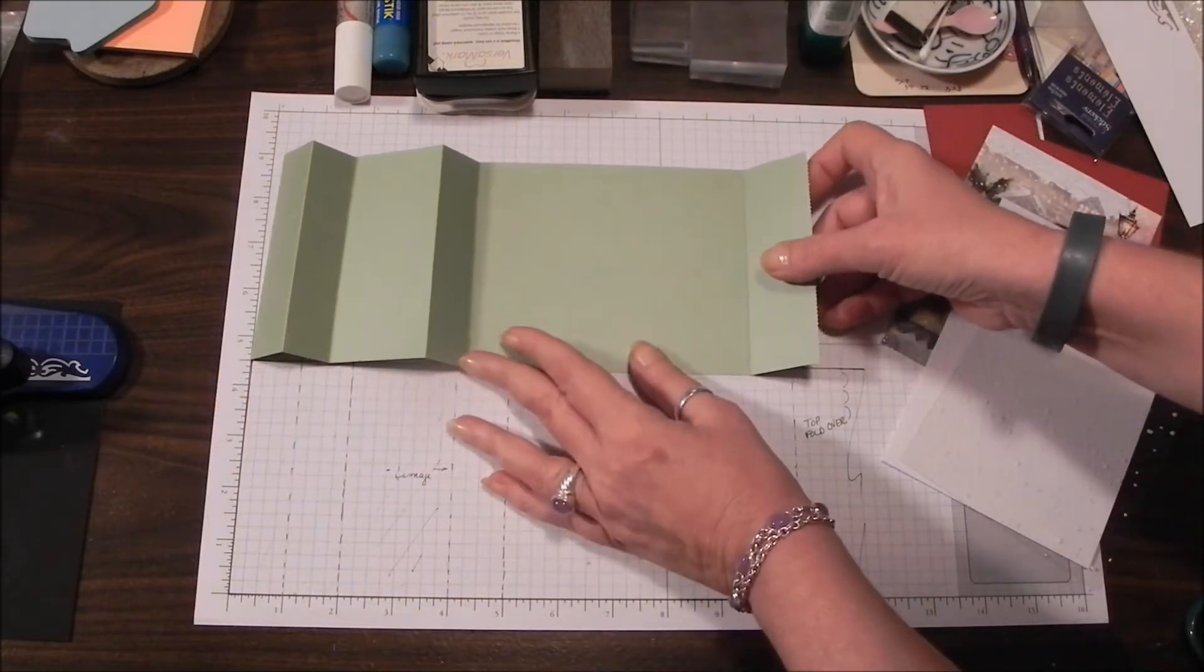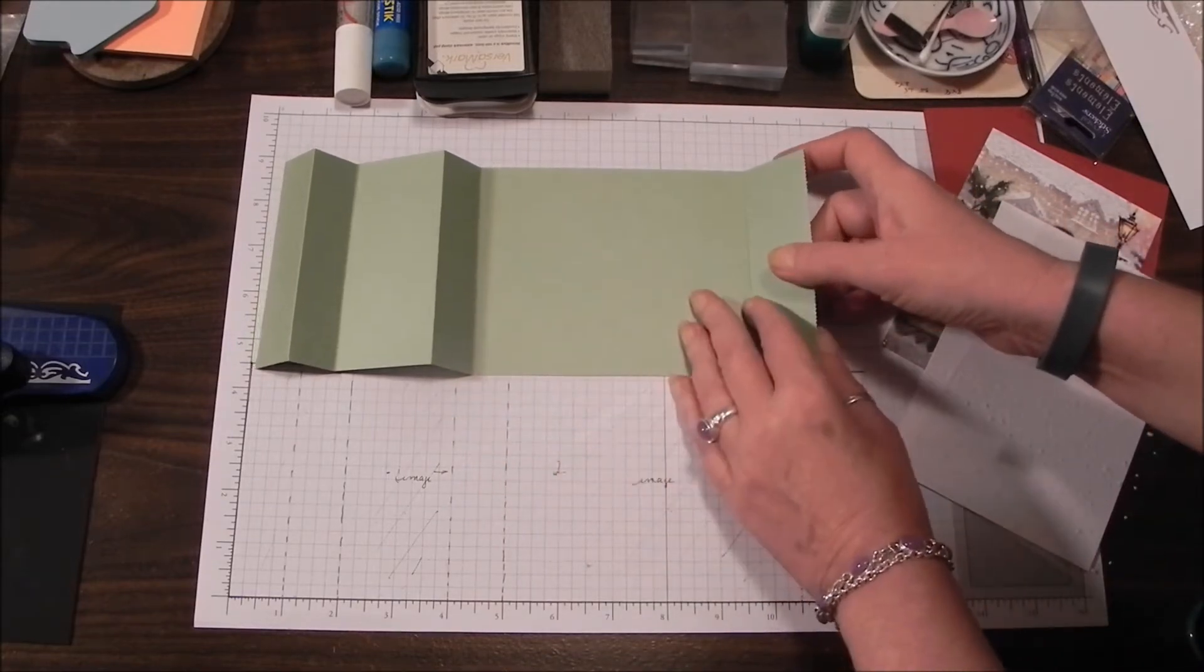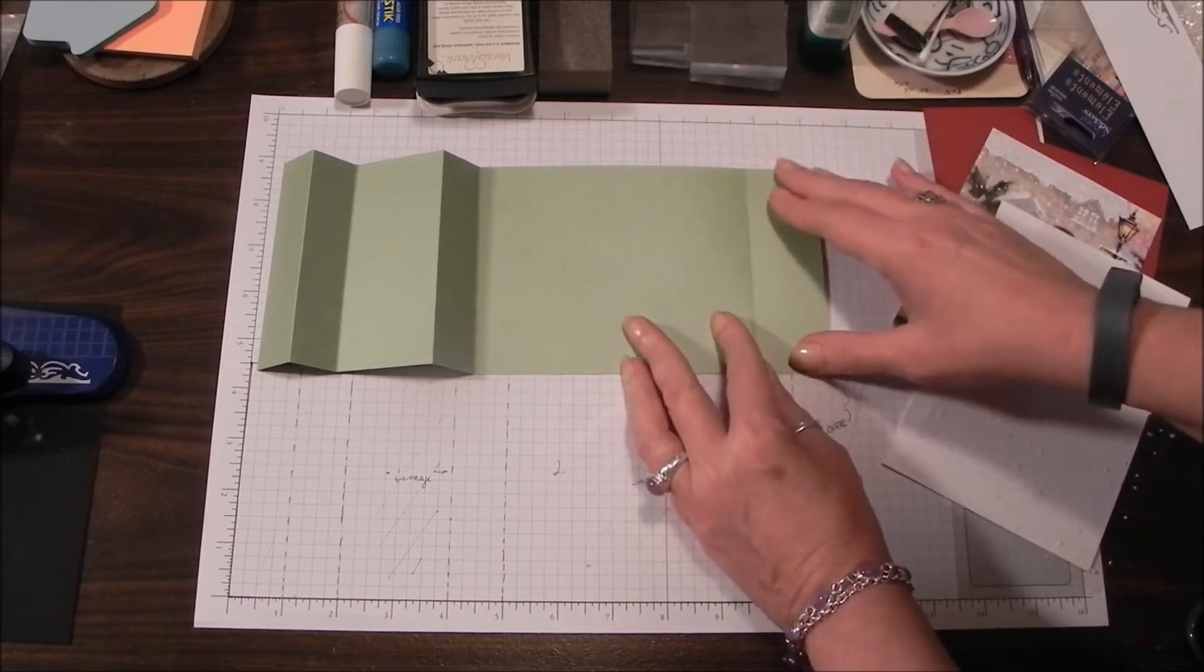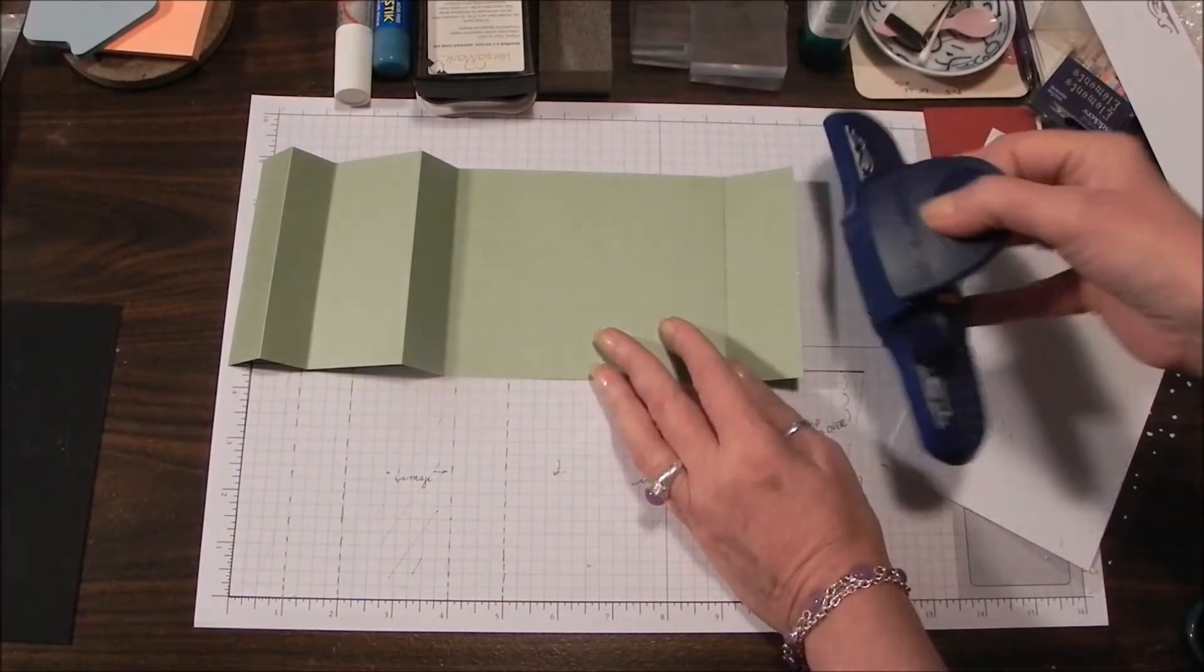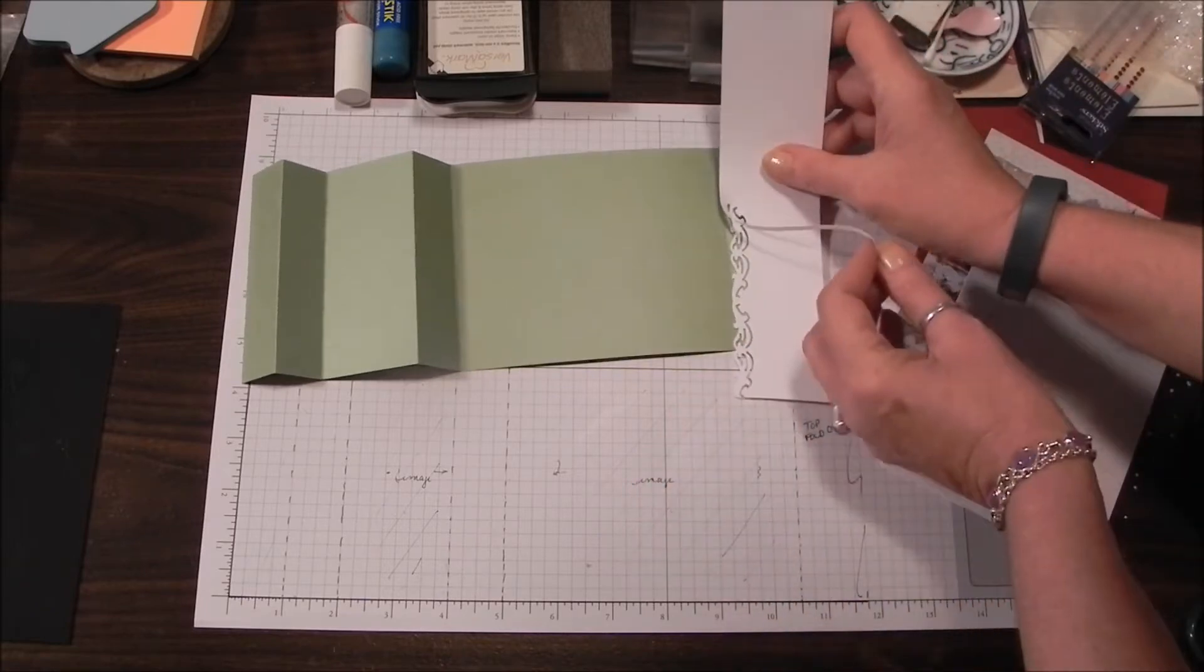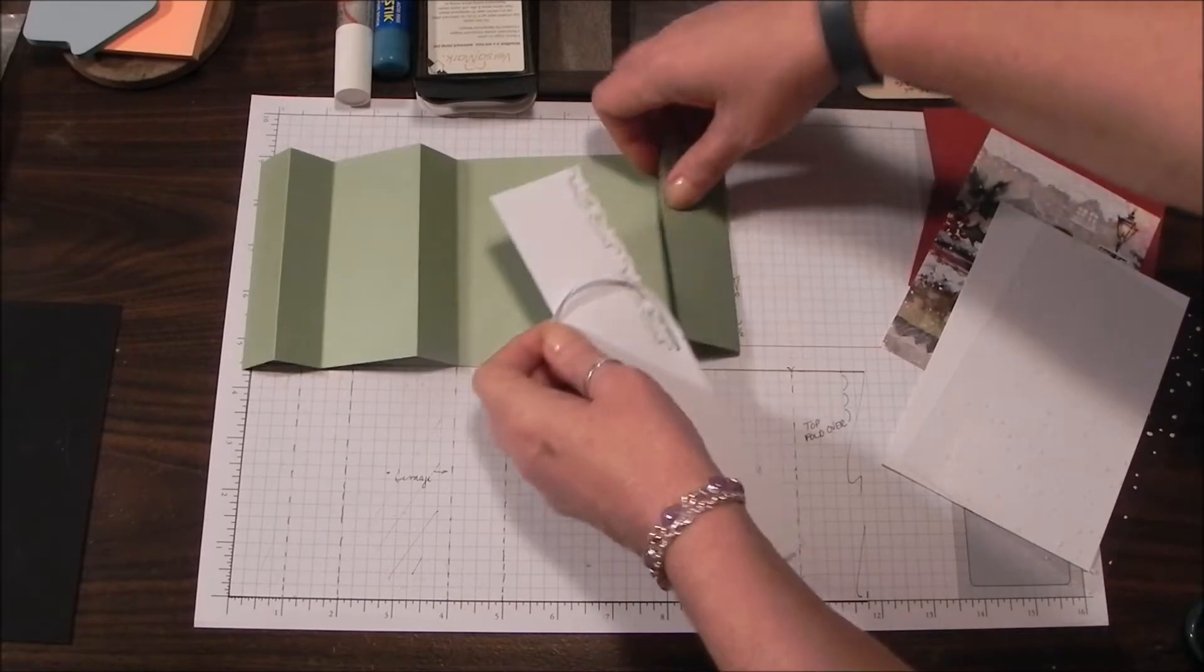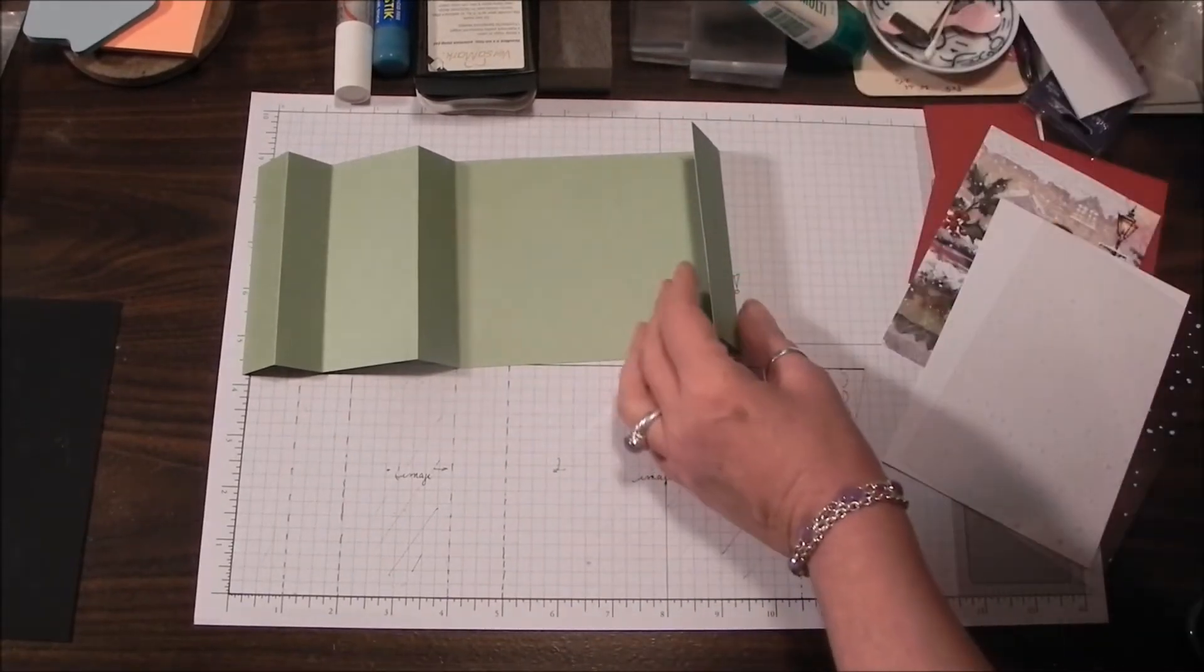The cardstock needs to be kind of medium weight, so something between 80 and maybe 100 pounds works really well. I left myself enough here to edge. I'm going to use a punch so I've got a decorative edge on that. I'm going to probably trim it to three quarters and then punch the edge, and that's going to give me this piece. It's totally optional.